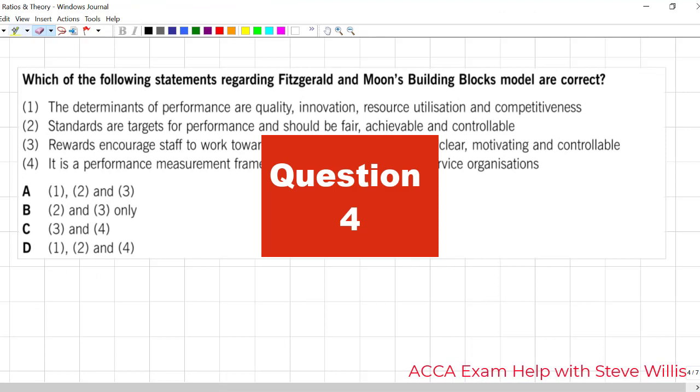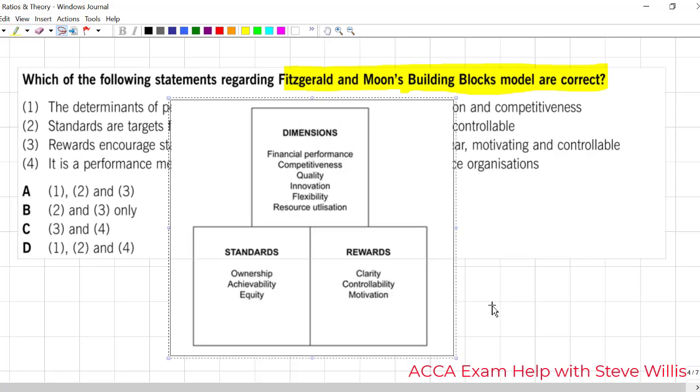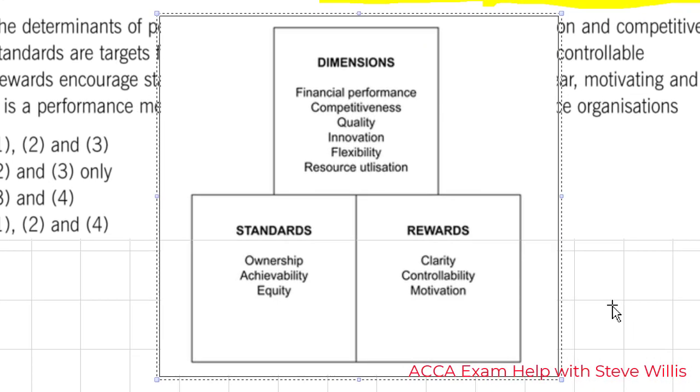Here we have a past exam question on the building block model. This one is the most obscure of the three models you need to know. Balanced scorecard, you need the value for money model, and you need the building block model. Before we do the statements, let's just quickly review this model. Here's that model. And if you remember, this is similar to the balanced scorecard. It is a framework for managing performance. It is an evolution of the balanced scorecard from the 1990s, specially created for service organizations.